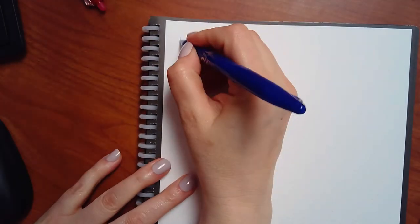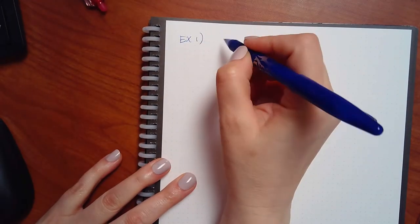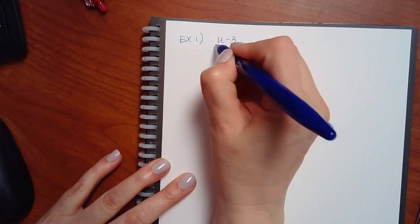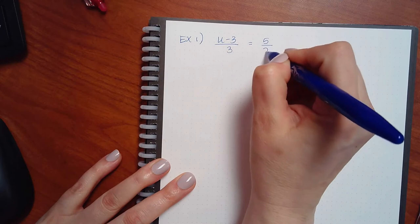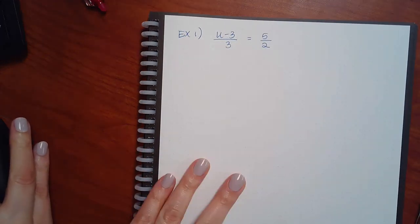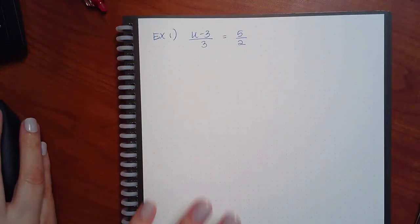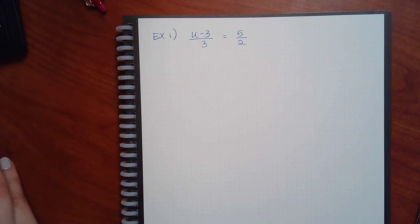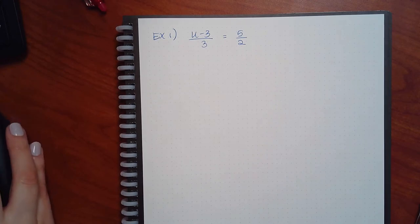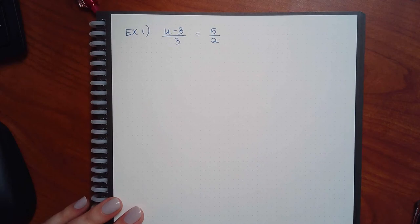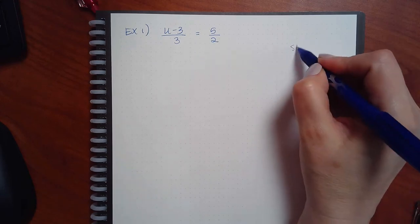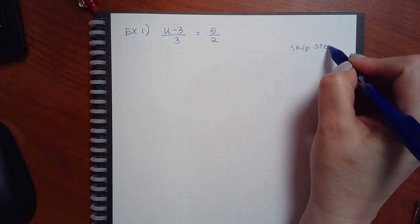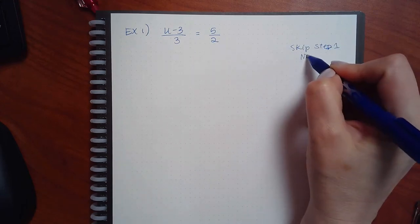Example one: (u − 3)/3 = 5/2. Do I have parentheses in this problem? No — so I'm going to skip step one. Step two says separate and eliminate fractions. Do I need to separate? Yes — (u − 3)/3 is two people over one denominator, so I separate it into u/3 minus 3/3. The other side, 5/2, is already just one fraction, so that's fine.